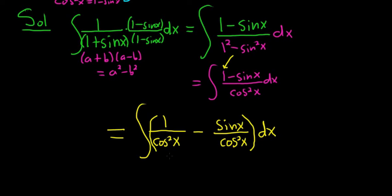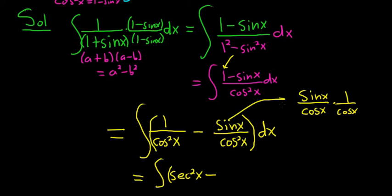So 1 over cosine is the secant function. So this will become secant squared x minus. And then sine over cosine squared, you want to think of it as sine x over cosine x times 1 over cosine x. Cosine times cosine is cosine squared, so it looks all right. And then sine over cosine is tangent. And 1 over cosine is secant, right? So this ends up being tangent x, secant x, parentheses dx.